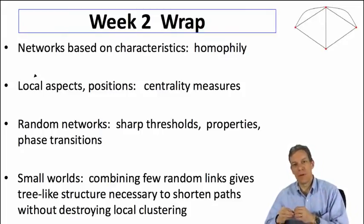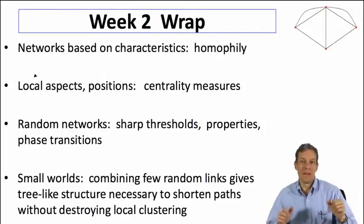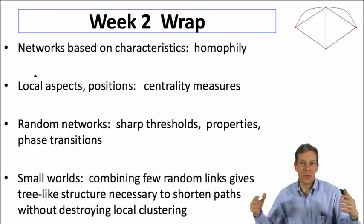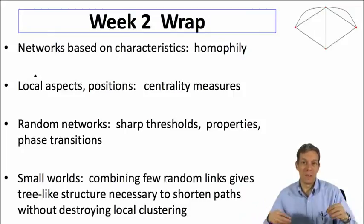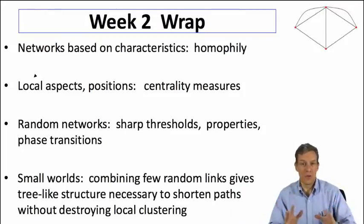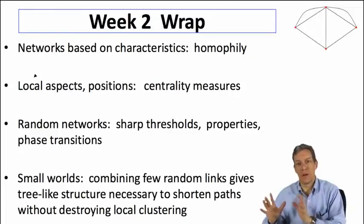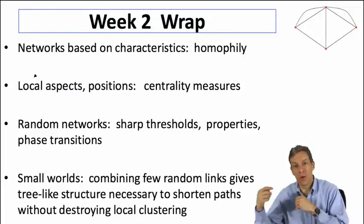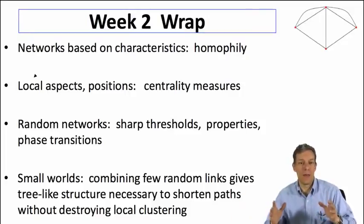Some of these measures are going to be very important: lying between different sets of individuals might be important in brokering situations; being close to other individuals might be important in spreading information; being connected to other well-connected individuals could also be important in disseminating things. These measures capture different aspects, and we'll keep them in our toolbox as we go forward — we're going to see them popping up when we're asking about behavior on networks.